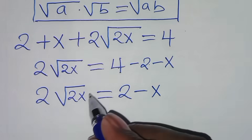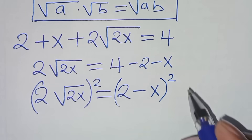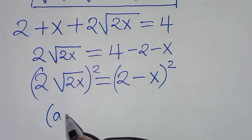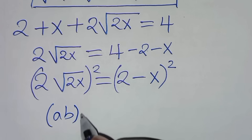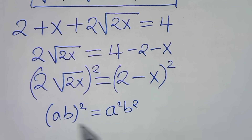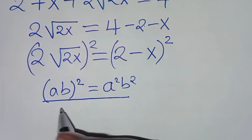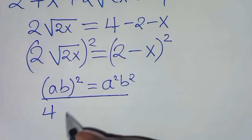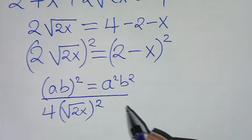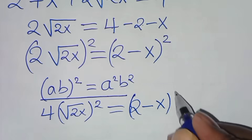The next step is to square both sides again. We have 2 square root of 2x squared equals 2 minus x squared. Using the property that a times b squared equals a squared times b squared, we get 2 squared times square root of 2x squared, which equals 2 minus x squared.